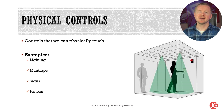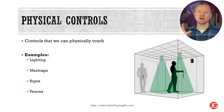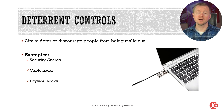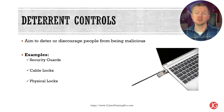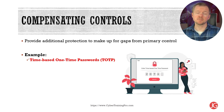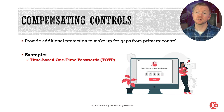A man trap has a room version where you go in one door, that door closes, and then you must show your badge, enter a PIN, or provide a fingerprint. A guard will verify you and then let you in through the next door. Another style is a turnstile where only one person can go in at a time. Deterrent controls aim to discourage people from causing an incident — examples include security guards, cable locks, and physical locks. Compensating controls provide additional protection to make up for gaps that a primary control creates, such as time-based one-time passwords commonly used in organizations that issue smart cards.